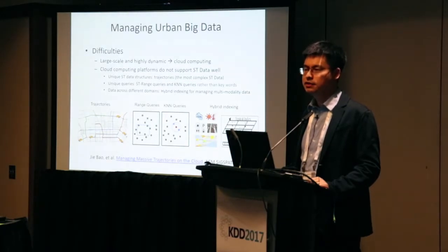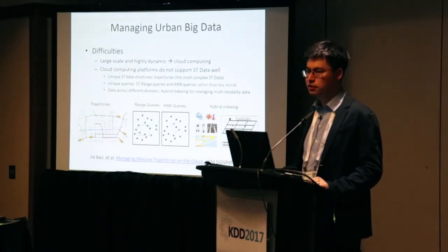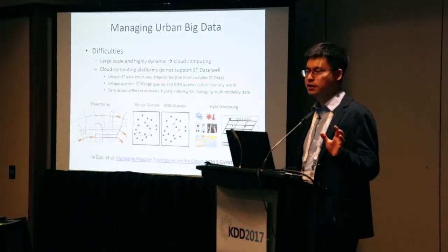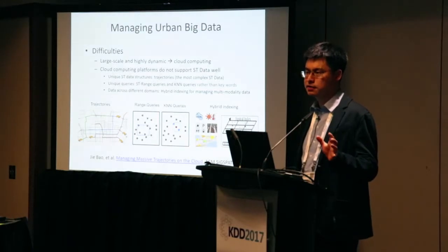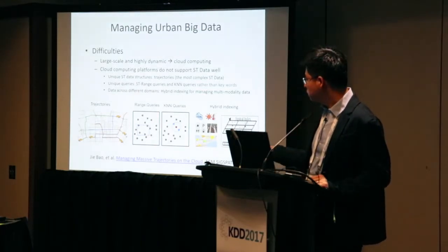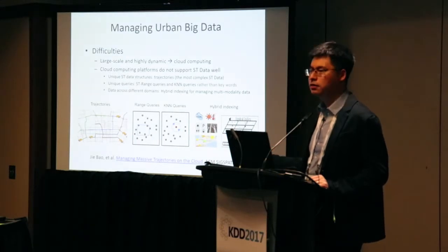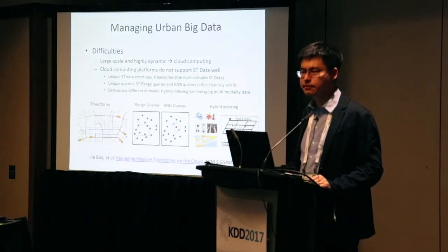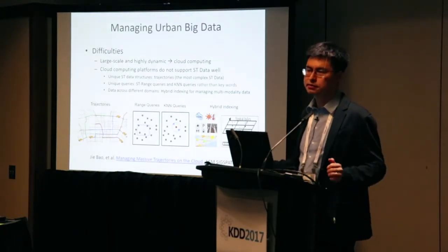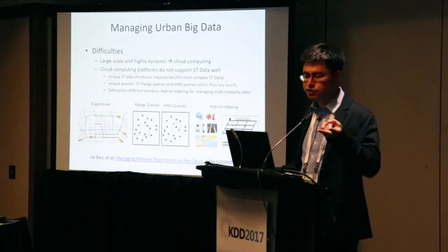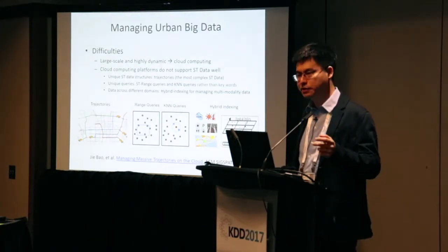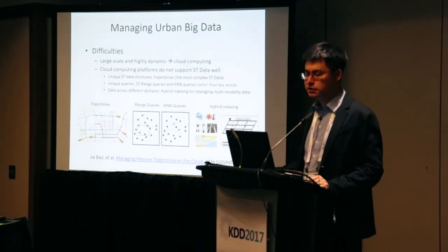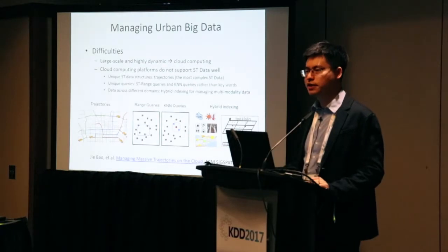Current cloud computing platforms cannot support spatial-temporal data well for three reasons. First, the data structure of spatial-temporal data differs from text or images. For example, once a photo is taken its size is fixed, but trajectory data keeps growing as vehicles move through a city, and we cannot swap two points from a single trajectory without completely changing the meaning of the movement.